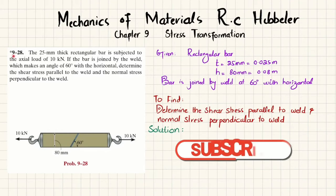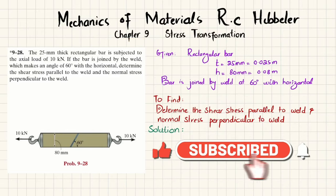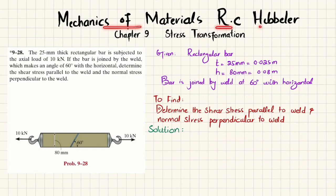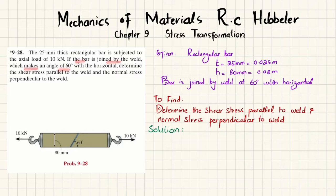Welcome back. Problem 9-28 is taken from Chapter 9, that is stress transformation, from the book Mechanics of Materials by R.C. Hibbeler. The statement is: a 25-millimeter thick rectangular bar is subjected to an axial load of 10 kilonewtons. If the bar is joined by a weld which makes an angle of 60 degrees with the horizontal, determine the shear stress parallel to the weld and the normal stress perpendicular to the weld.